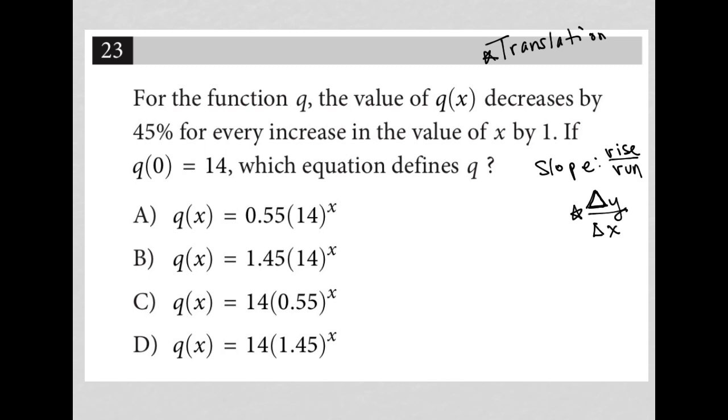Because it's saying that the q(x), which is always a y value, right? Our function is always a y, like all these guys can be crossed out and replaced with y if we wanted to. So the question is saying that that y value decreases by 45%. So 45% decrease is like saying my change in y is down 45%.